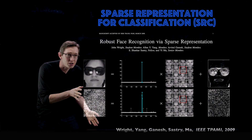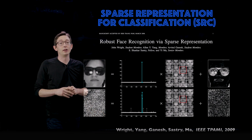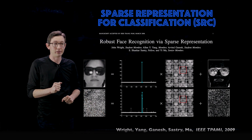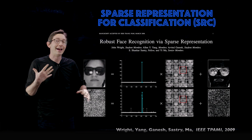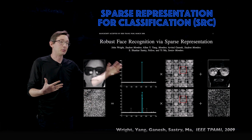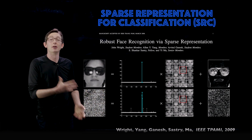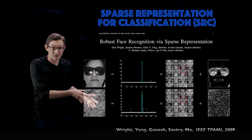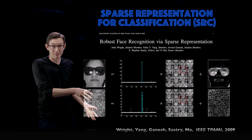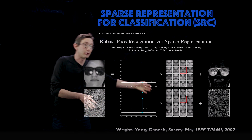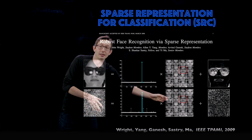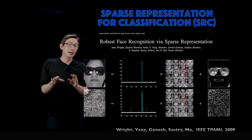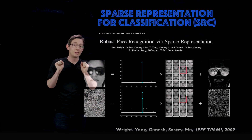There's a similar example with the same person but with tons of noise on the image. Through this procedure, there is still enough information for the algorithm to cross-reference it against the library and identify the person. So I'm going to walk you through this algorithm and show you how it works.